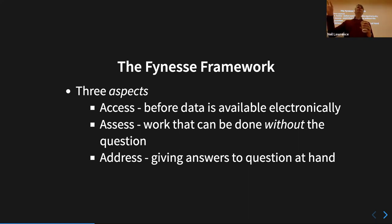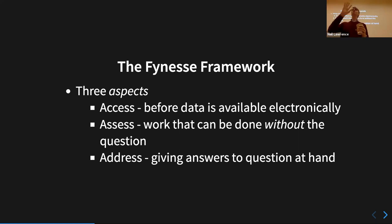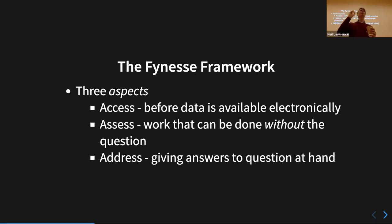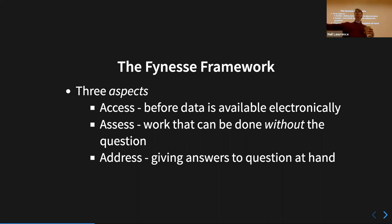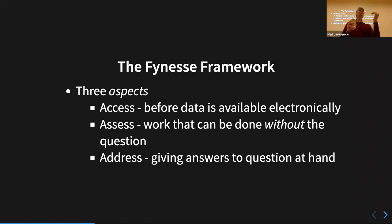Other things assess might involve: characterizing missing values and how they're represented, what values the columns take as part of schema calculation, whether data is categorical, issues with outliers, how data was collected. Address is where you take a specific question and do things specific to that question. The reason we separate address is because assess should be reusable. People are integrating access, assess, and address into one analysis, which means someone later who wants to use the same data can't benefit from the access and assess work already done.